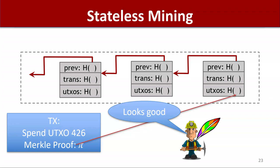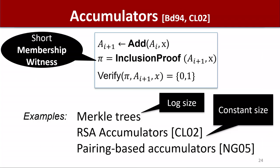Stepping back and looking more broadly at accumulators: we didn't talk about how things get added to the accumulator — how do things get added to the Merkle tree? Can we do that in a distributed way, so that people not storing the entire accumulator state can all simultaneously update it when they see a new transaction? Merkle trees are examples of accumulators. There are also RSA accumulators, which are the basis of the work I'm going to present. There are other types as well — they achieve different trade-offs. One nice thing about RSA accumulators and pairing-based accumulators is that the proof size is constant, as opposed to the log-size proofs that Merkle trees have.